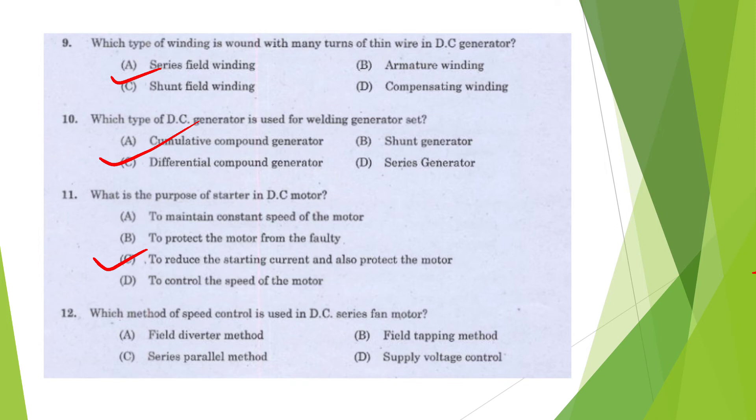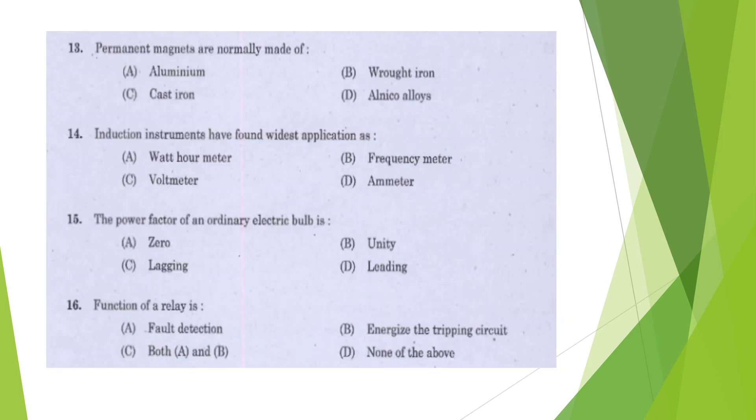Question 13: The method of speed control used in DC series fan motor is field diverter, field tapping, series panel, or supply voltage control? Option D, supply voltage control. Question 14: The permanent magnets are normally made of aluminum, rotor, cast, or alnico alloy? Option D, alnico alloy.